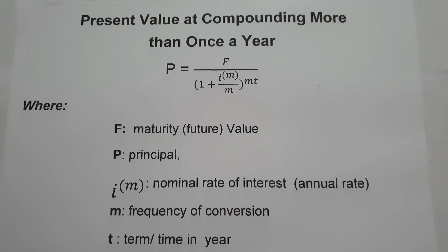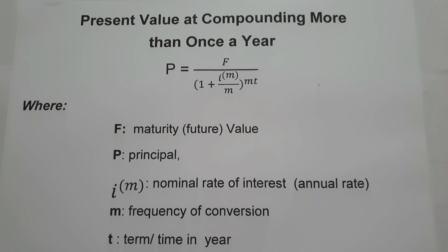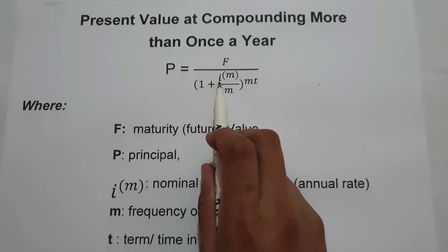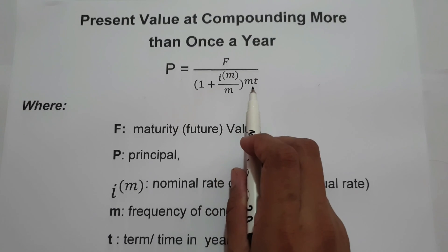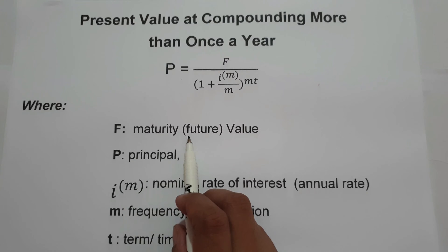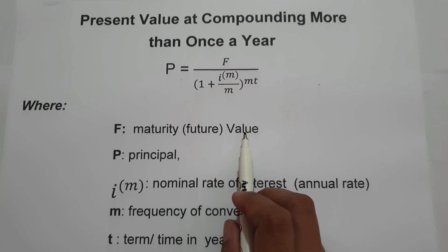Welcome to another video. In this video, we are going to focus on how to find the present value compounding more than once a year. We are going to use the formula P equals F over 1 plus I raised to M over M, raised to M times T. Where F is the future value or the maturity value.